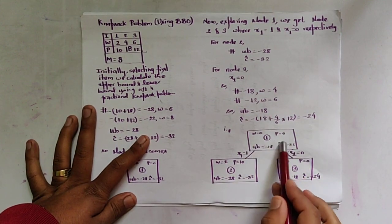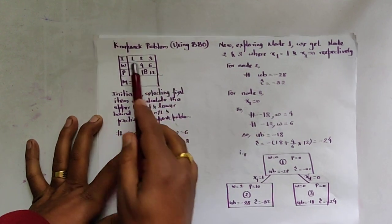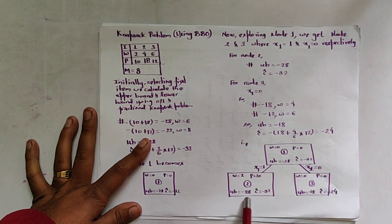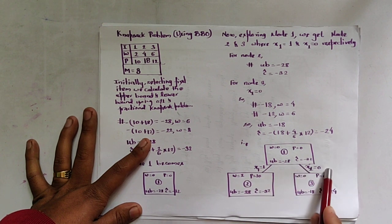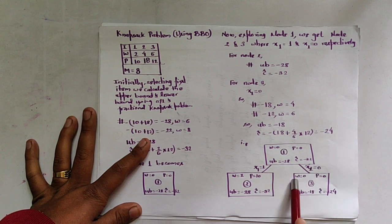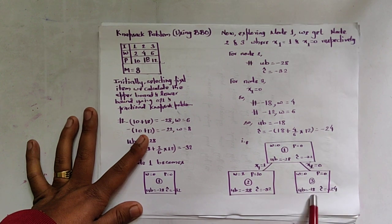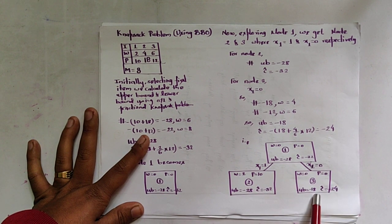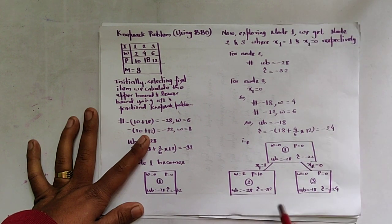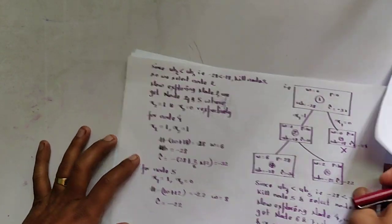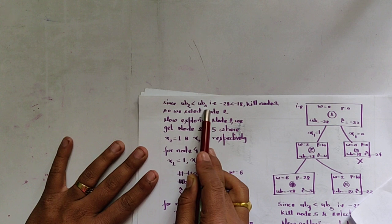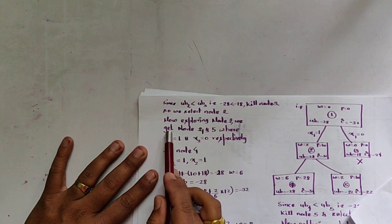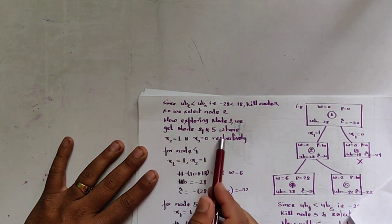Representing these nodes: node 2 has x1=1 selected, so weight=2 and profit=10, with upper bound -28 and lower bound -32. Node 3 has x1=0 with w=0, p=0, upper bound -18, and lower bound -24. Comparing upper bounds, -28 is less than -18, so we select node 2 and kill node 3.